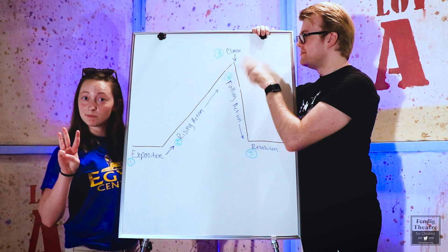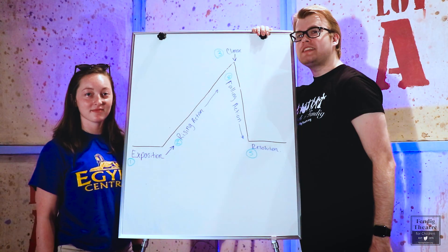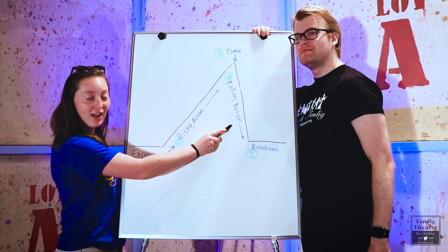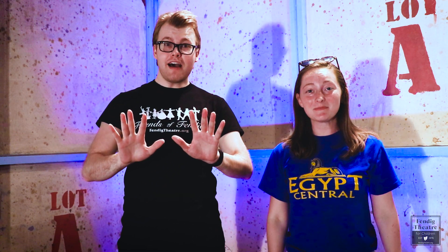Step three: Climax. The climax is the event that all the events have led up to. This is usually the turning point for the main character's problems to start to get solved. Belle says, 'I love you.' Step four: Falling Action. The falling action is when the main conflict is getting resolved. The spell gets reversed and the Beast transforms into a prince.